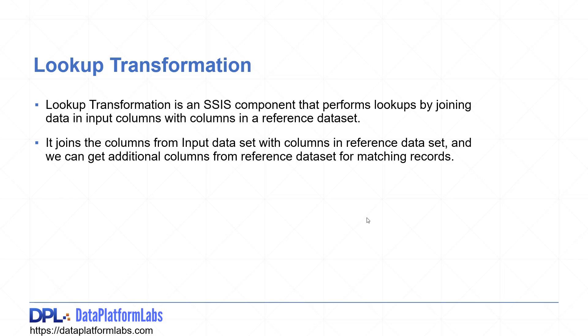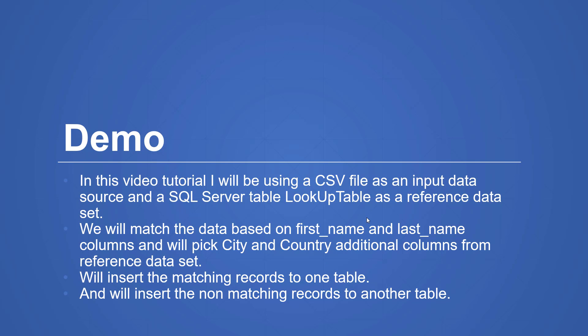Lookup transformation is an SSIS component that can perform lookups by joining data in input columns with columns in a reference dataset. It joins the columns from the input dataset with columns in the reference dataset and then we can get additional columns from the reference dataset for matching records. In this video tutorial, I will be using a CSV file as an input data source and a SQL Server table named lookup table as a reference dataset.